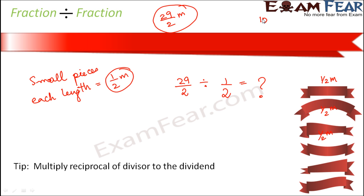Let us say you had 10 chocolates and you divided those 10 chocolates among 5 friends — how many chocolates does each get? For that you divide 10 by 5, and only then you get how many chocolates each got. The same thing is true here: the long ribbon is divided into smaller ribbons, so the length of the long ribbon is divided by the length of the smaller ribbons.